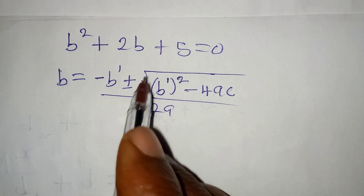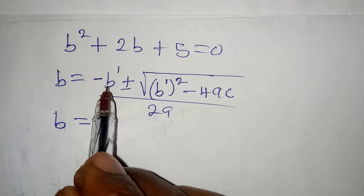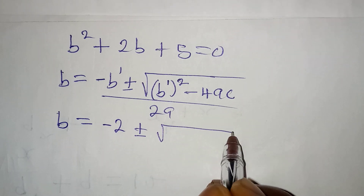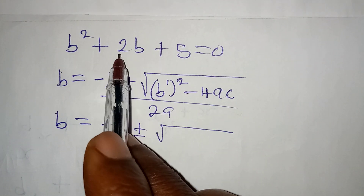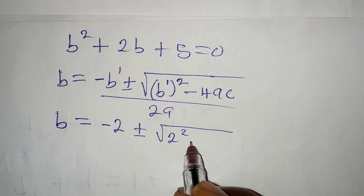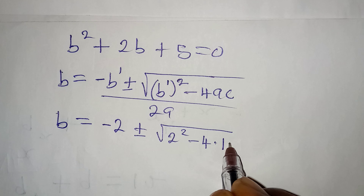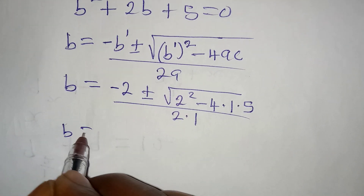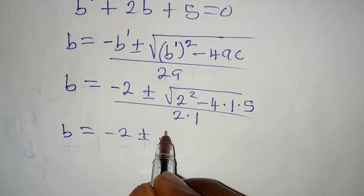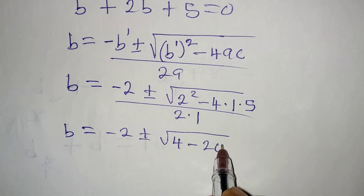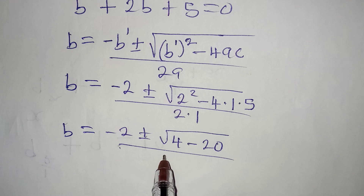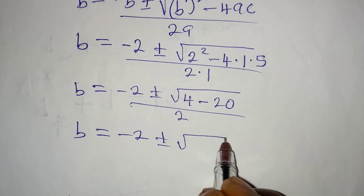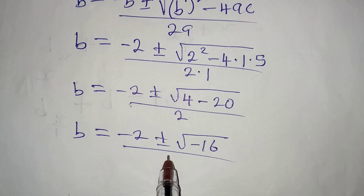Substituting into the formula, b equals negative 2 plus or minus the square root of 2 squared minus 4 times 1 times 5, all over 2 times 1. This gives b equals negative 2 plus or minus the square root of 4 minus 20, all over 2, which is b equals negative 2 plus or minus the square root of negative 16, all over 2.